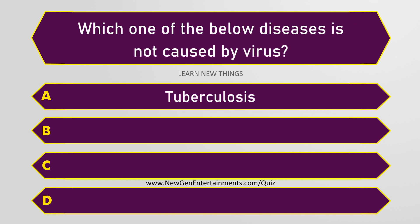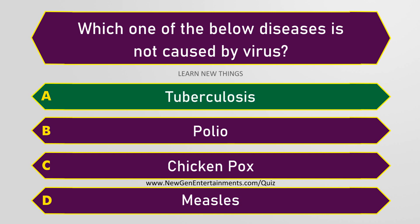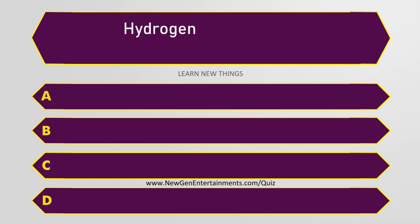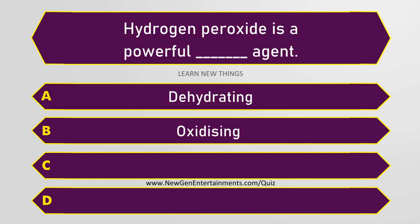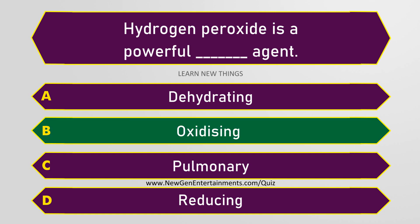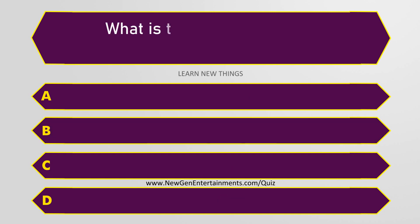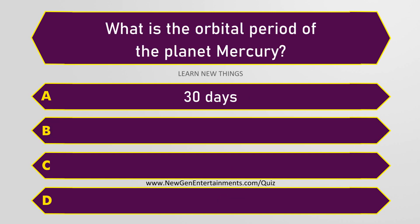Which one of the below diseases is not caused by a virus? Tuberculosis. Hydrogen peroxide is a powerful oxidizing agent. What is the orbital period of the planet Mercury? 88 days.